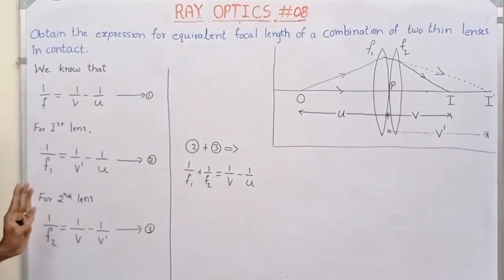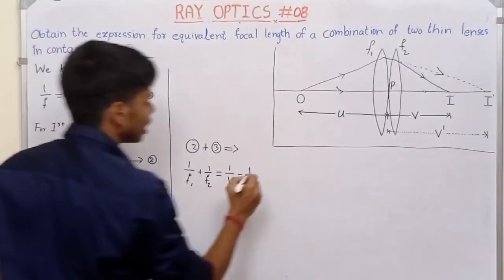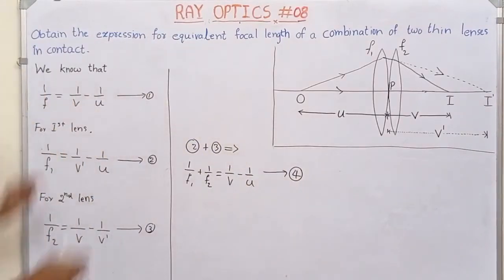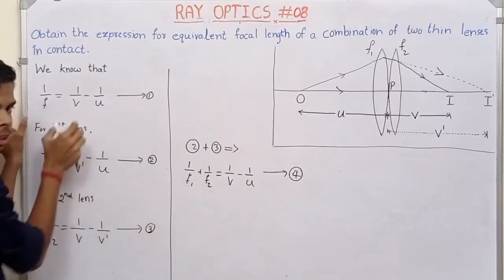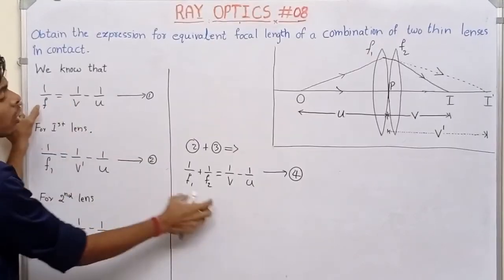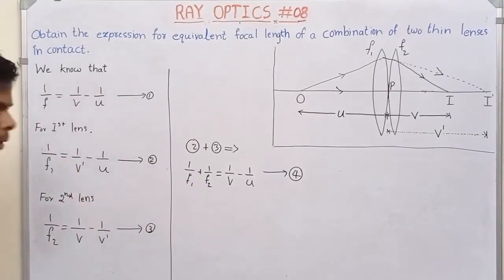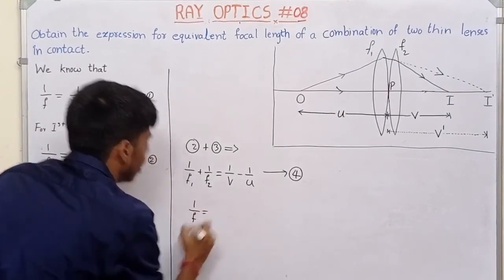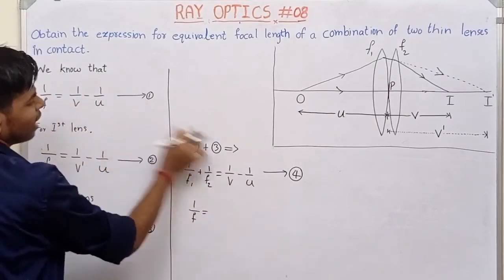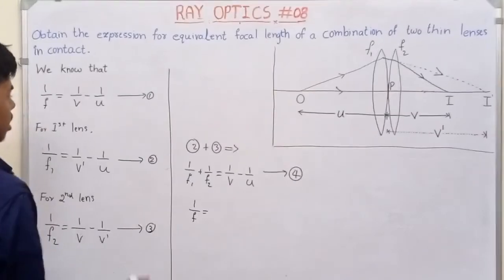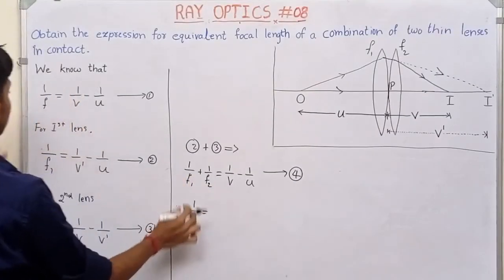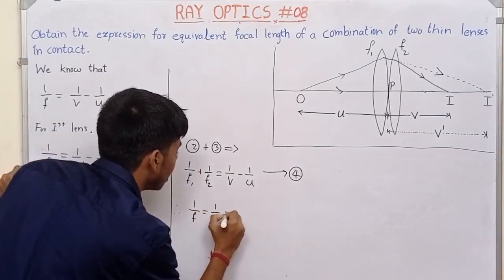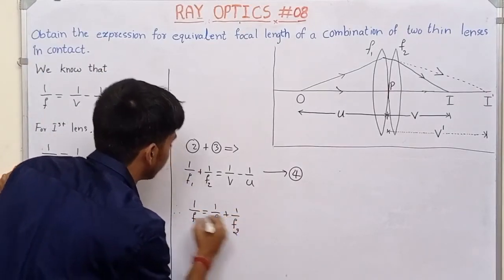Same to same — the same figure. So from this derivation, 1 by F is equal to 1 by F1 plus 1 by F2. We have completed the derivation.